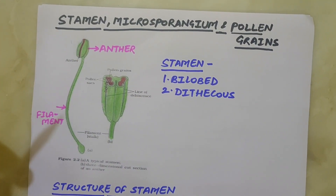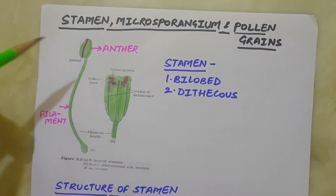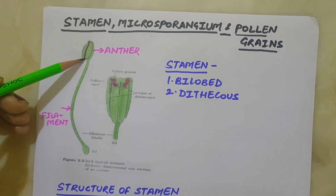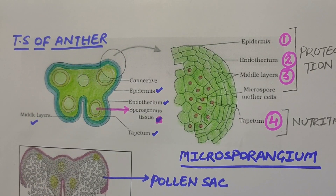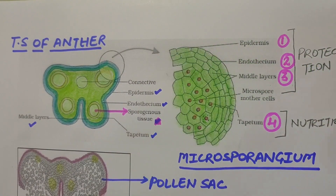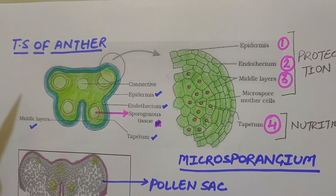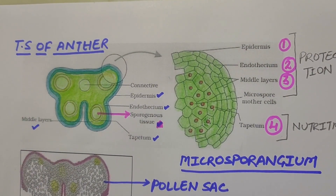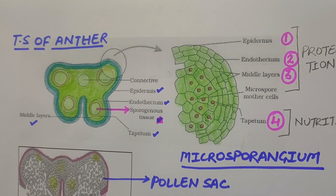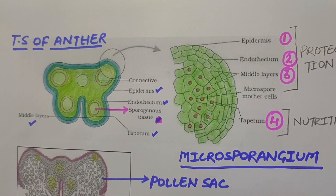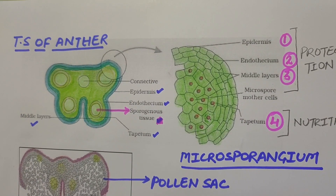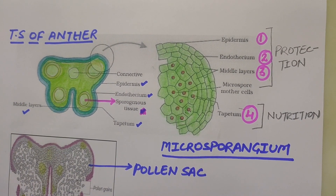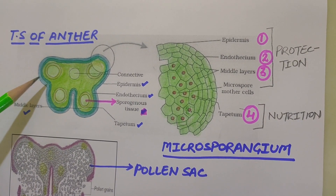Each lobe has two theca, meaning two compartments in each lobe, and there is a longitudinal groove which separates the theca. If we look at the transverse section of the anther, we can say that the anther is a four-sided, tetragonal structure consisting of four microsporangia located at the corners, two in each lobe. The cells of the theca develop to form the microsporangium, which further develops to form the pollen sac, and in this pollen sac pollen grains are produced.